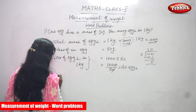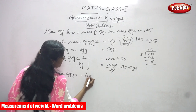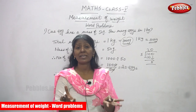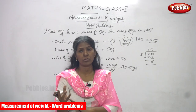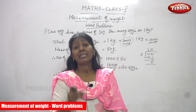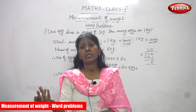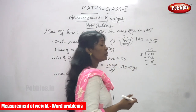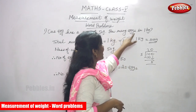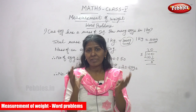Therefore, number of eggs is equal to 20. That means in 1 kilogram of weight — 1 kilogram equals 1000 grams — in that 1000 grams of weight you will find 20 eggs. So 20 eggs in 1 kilogram. The total weight of the eggs is equal to one kilogram.